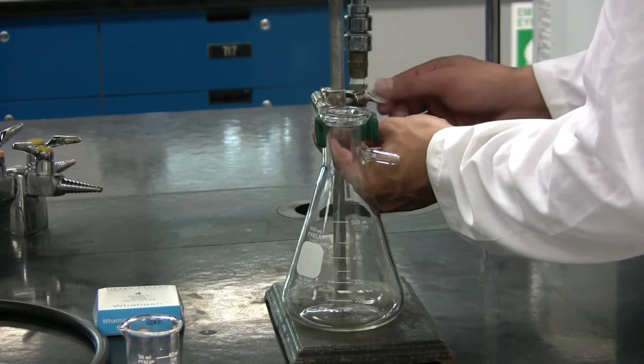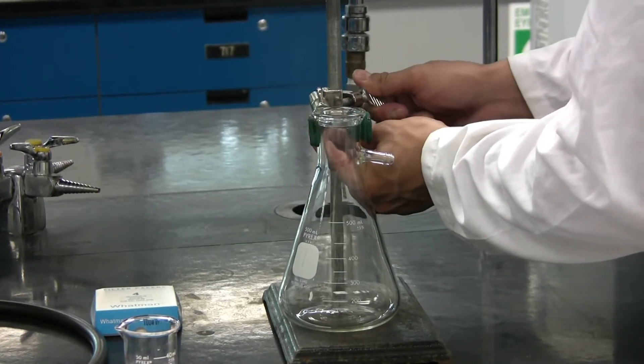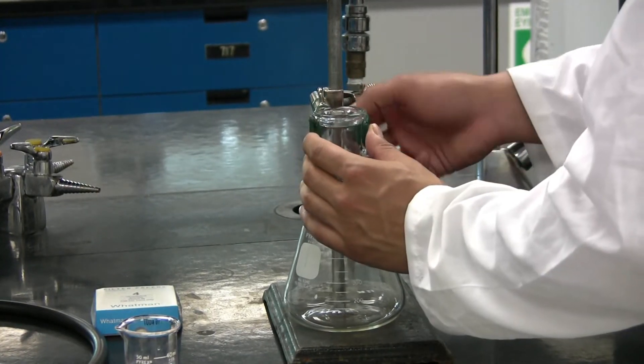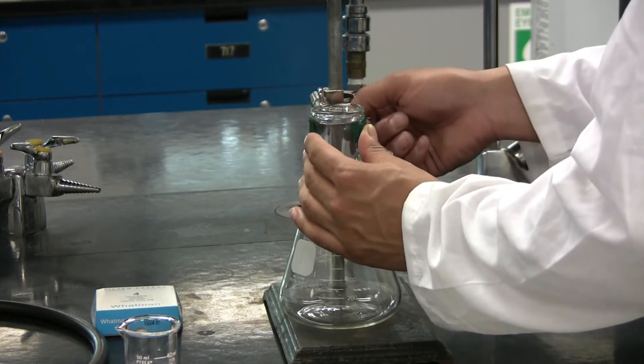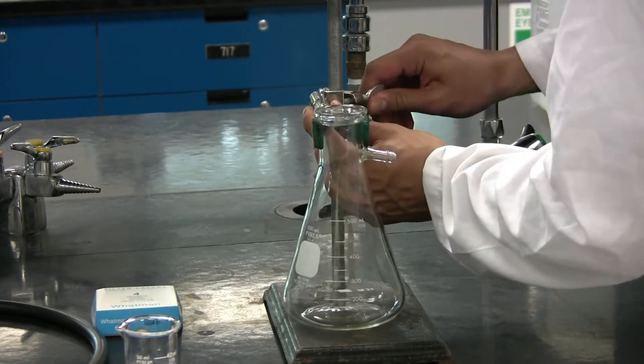Start by securing the vacuum Erlenmeyer flask to the retort stand using the clamp. Make sure all parts of the clamp are securely fastened.